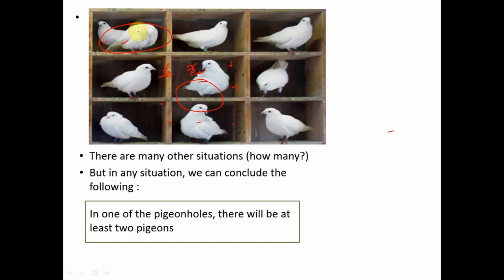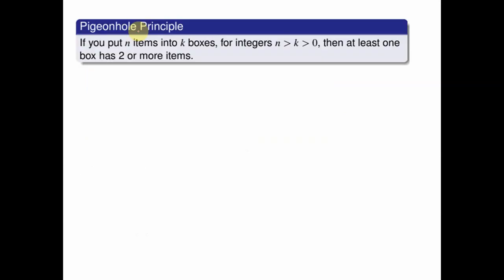Let us understand this principle a little more formally. The pigeon hole principle says: if you try to put n items into k boxes where n is greater than k — the number of items is more than the number of boxes, both greater than 0 — then at least one box will have 2 or more items.